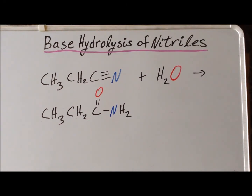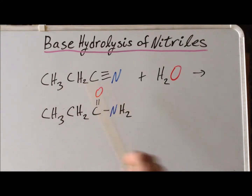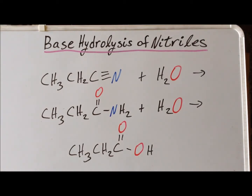In our second reaction, we are going to hydrolyze propanenitrile under base conditions with water, and our first product is going to be propionamide — the amide of propionic acid — which we get in the first step by the base hydrolysis of propanenitrile. If we now continue the base hydrolysis, we can transform propionamide all the way to the carboxylic acid propionic acid. Please see the following figures showing the computed structures for reactants, products, and important transition states in the course of this reaction.